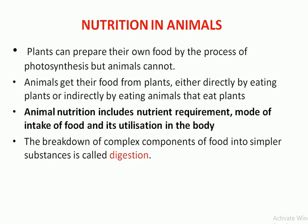Plants can prepare their own food by the process of photosynthesis, but animals cannot. Animals will depend on plants or plant-eating animals, so these are termed as heterotrophs.